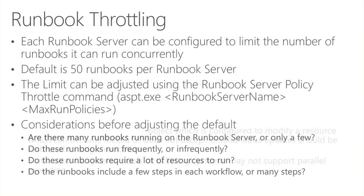An important administrative topic is runbook throttling. The default value is that every runbook server can run 50 runbooks at the same time. You can configure a different number using the command line tool ASPD.exe, with two parameters: the runbook server name and the maximum number of runbooks you'd like to define for that runbook server. You can set that to a lower or higher number, but consider a few things first.